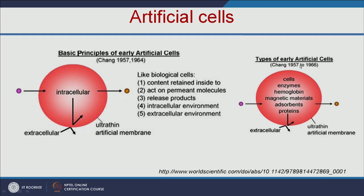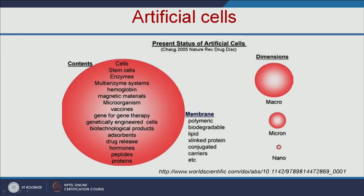These are the types of early artificial cells. We can encapsulate cells, enzymes, hemoglobin, and various other materials. In the present status of artificial cells, we can encapsulate cells, stem cells, enzymes, and everything inside an artificial membrane. This membrane can be polymeric, biodegradable, or lipid and protein-based. These artificial cells are available in various dimensions — macro, micro, or nano — depending on the cellular content you want to encapsulate.